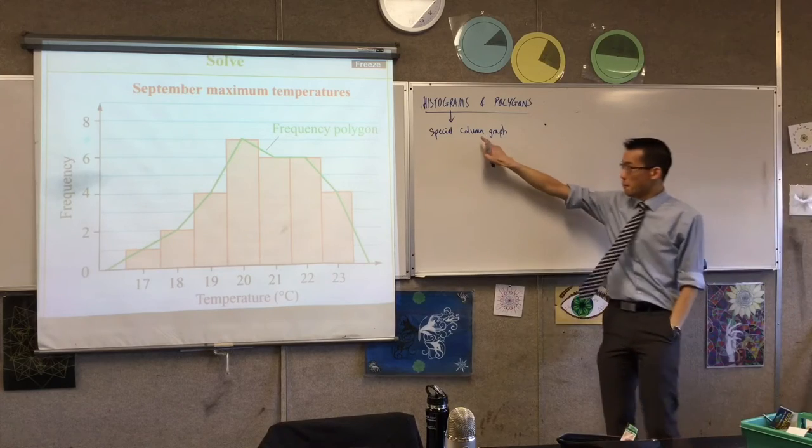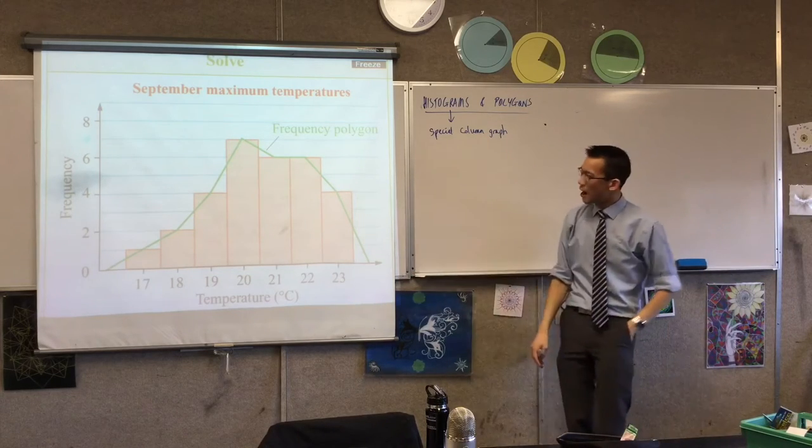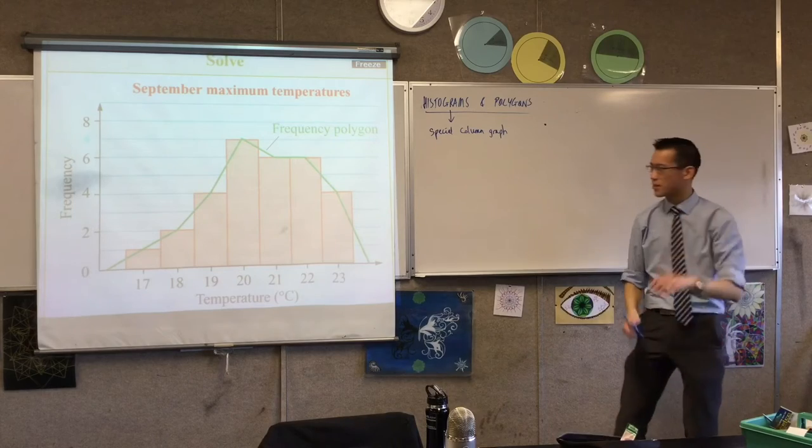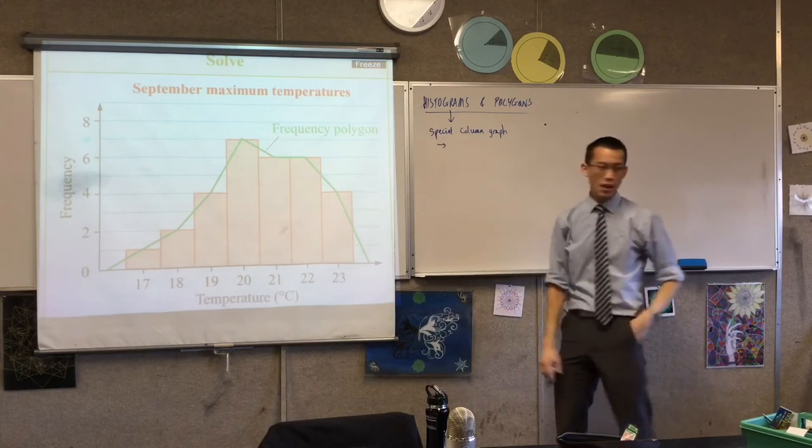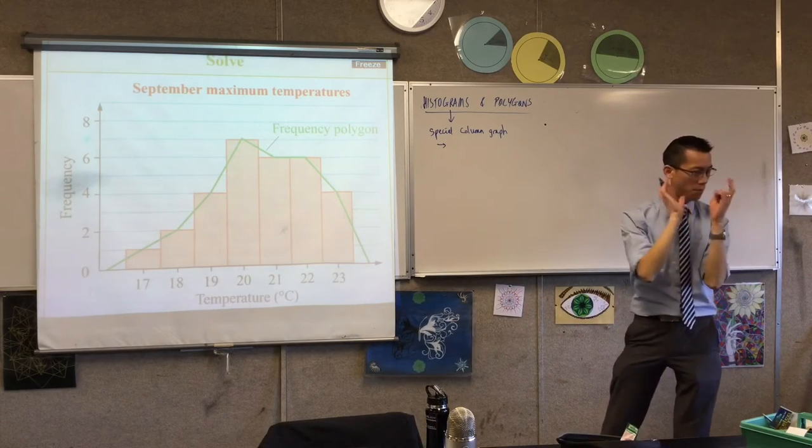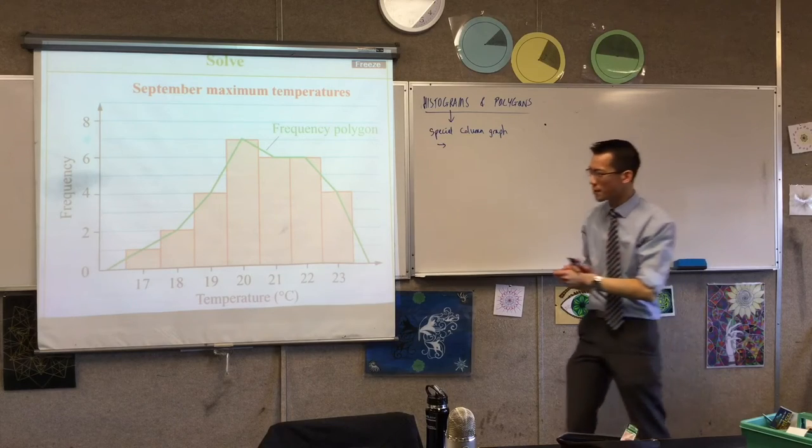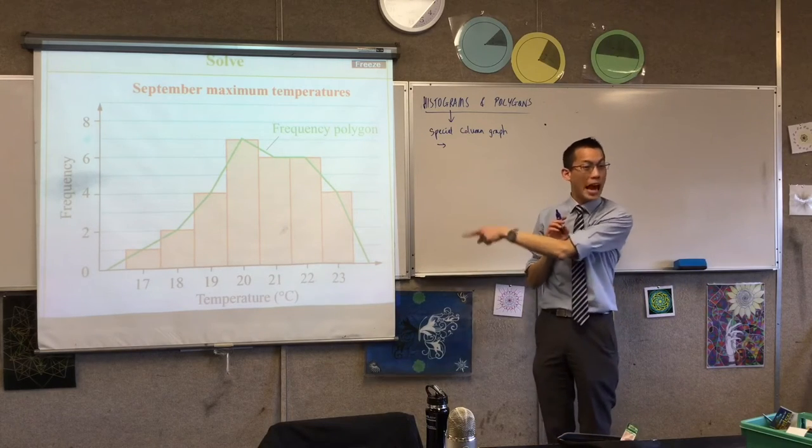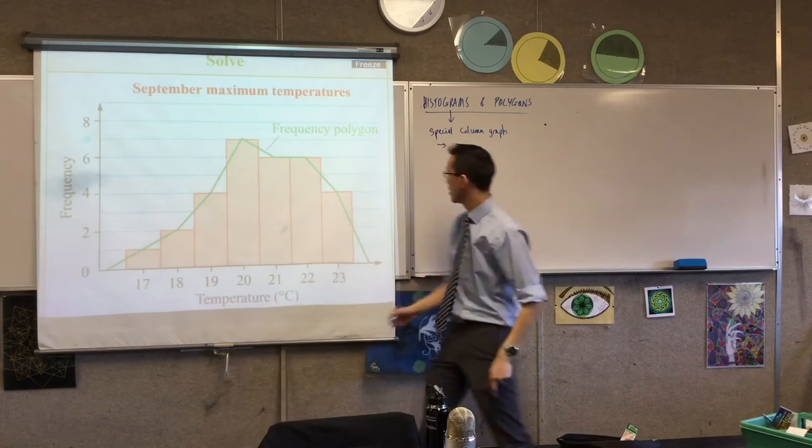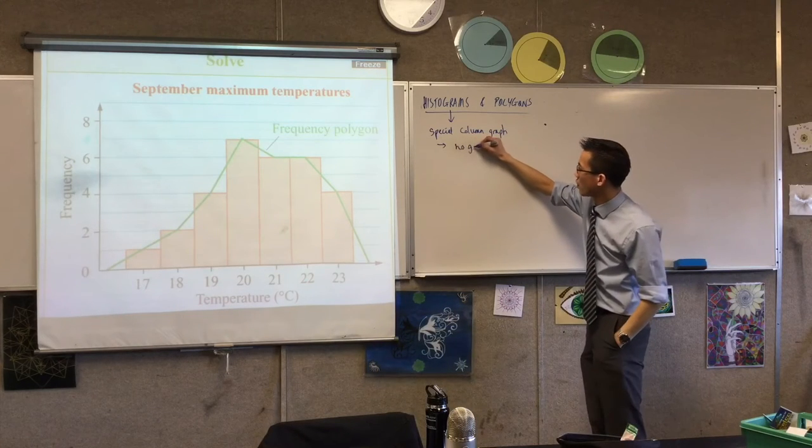So it's a column graph, as you can see, but it has a couple of minor differences. Underneath here, number one, you'll notice I pointed this out when we were doing column graphs before. Do you see there are no gaps between the different columns? So it's got no gaps between columns.